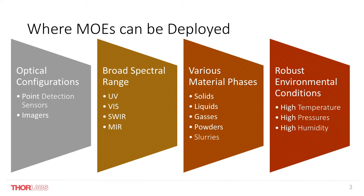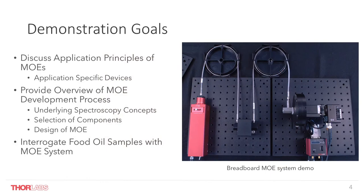Simply put, if you can use a spectrometer to detect or measure a chemical or component, then chances are an MOE could be developed to make that same measurement with the same accuracy, but in a much simpler and potentially more robust system. We should highlight where MOEs can be most advantageous, a few key application principles, and what goes into a typical MOE system. We will also try to shed a little light on the process of creating the MOE.